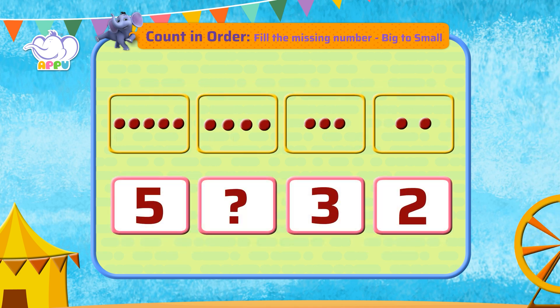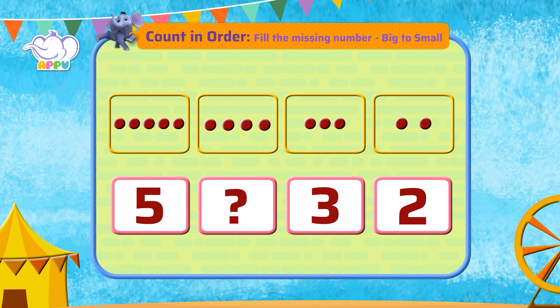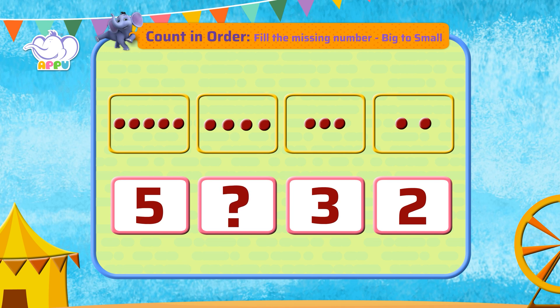We have the number five, a missing number, three, and then number two. What is the missing number?